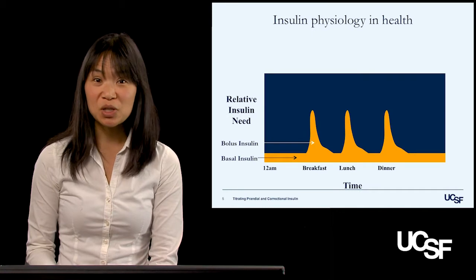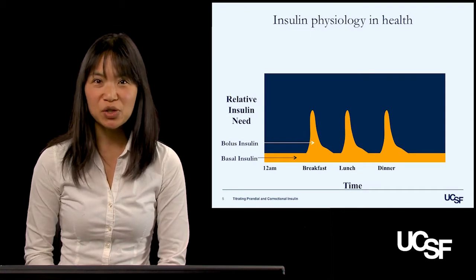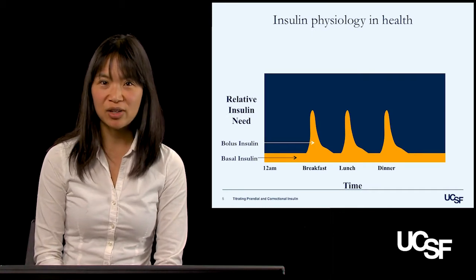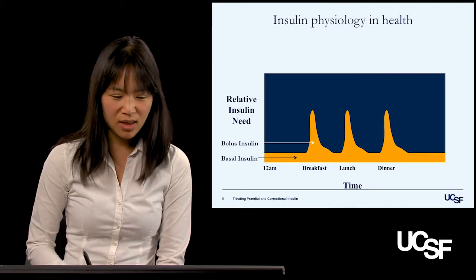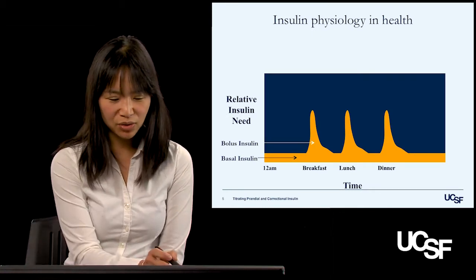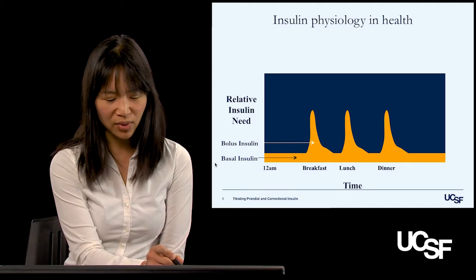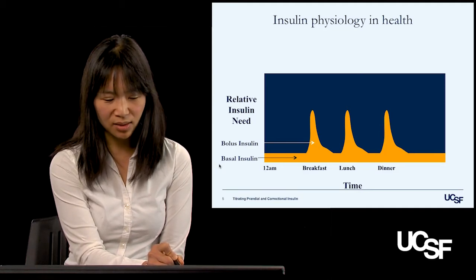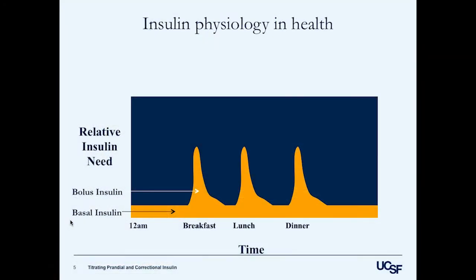I'm going to go back to a graph I've shown you before on insulin physiology in health. This is my cartoon drawing of insulin requirements in health and in diabetes, where we have basal insulin, which we've talked extensively about. And now we're going to be talking about bolus insulin, which is important for mealtimes and high sugar correction.